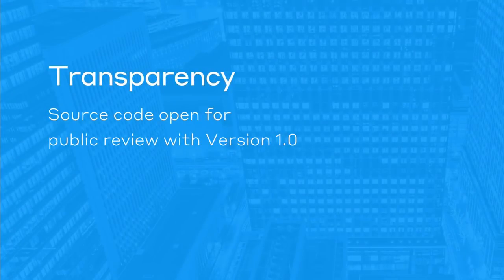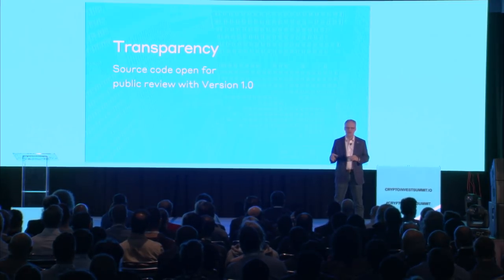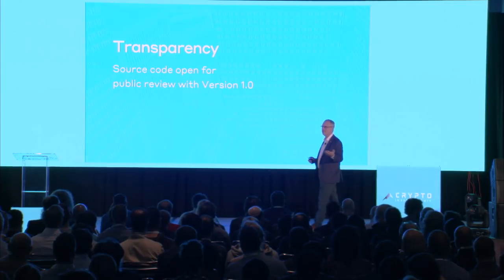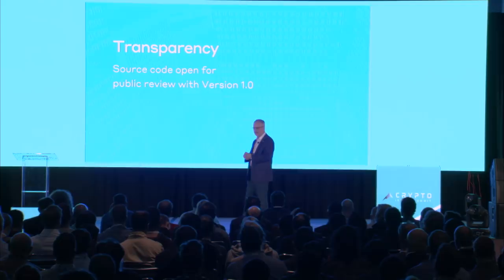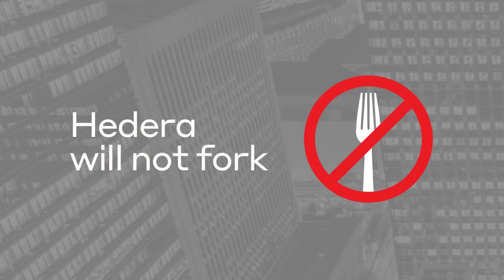With version one we're going to release the source code, so there will be full transparency in exactly what is being built. Everyone on the planet will be able to download the source code, read every single line, compile it, and compare it to the binaries you can download and run on your own home computer as a node in the network. However, we're using the patents in a novel way — with the patents, insofar as we are able to enforce them, we are making a promise to the market that this platform will never fork. There will be a single platform and a single cryptocurrency forever.